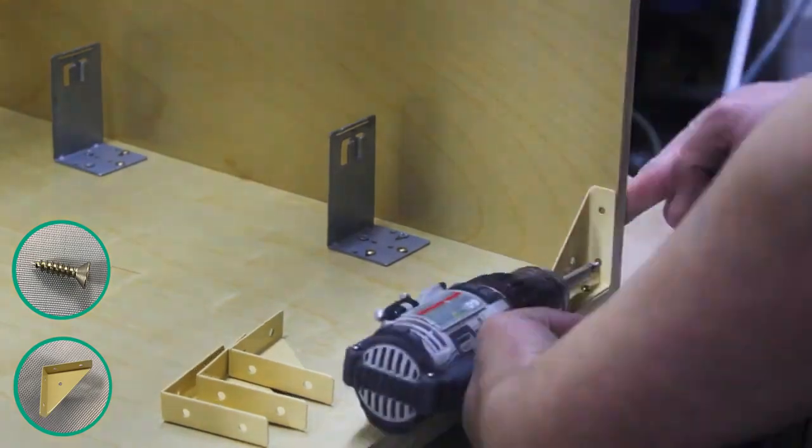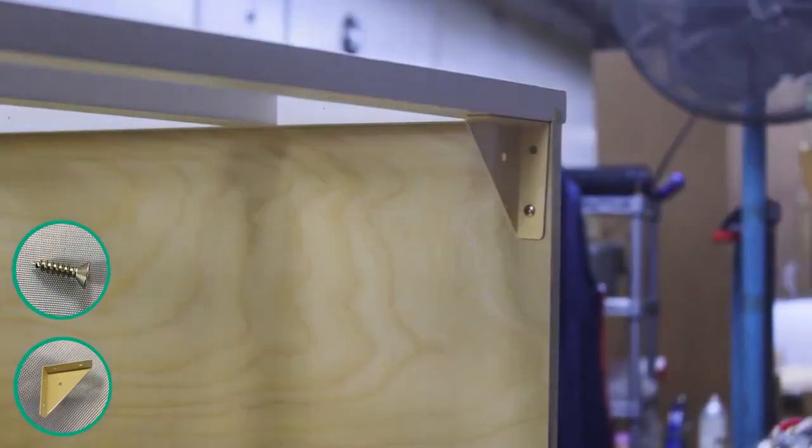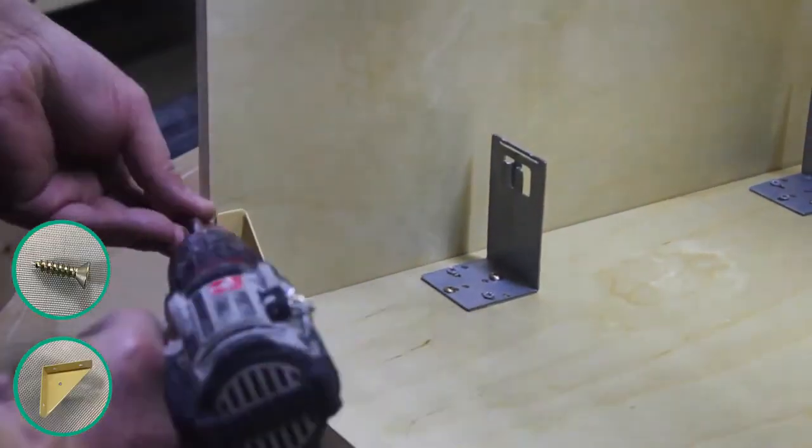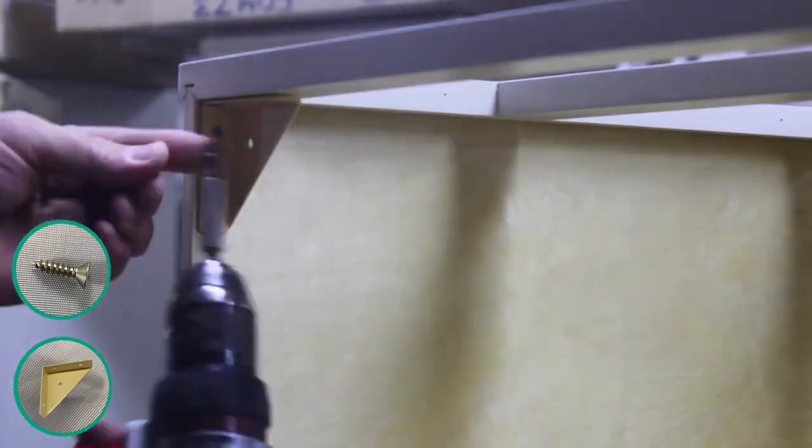Now you want to place a corner bracket in each corner of the top of the cabinet. Make sure they are near the top of the cabinet. These will join the face frame and the back wall together with the side walls of your cabinet.